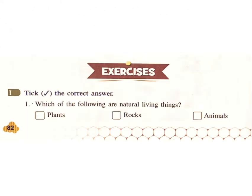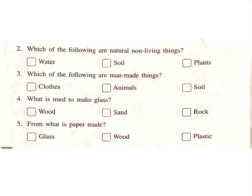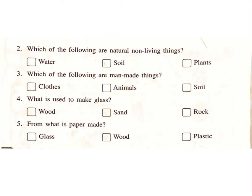Tree — natural. Wood — natural. Chair — man-made. Paper — man-made. Exercises: tick the correct answer. 1. Which of the following are natural living things? Plants, rocks, animals. Answer: plants, animals. 2. Which of the following are natural non-living things? Water, soil, plants. Answer: water, soil.